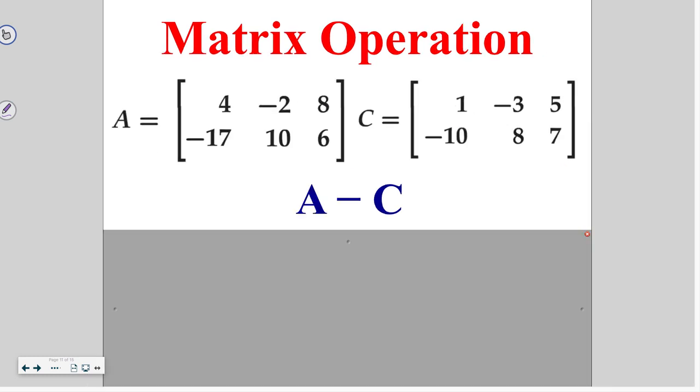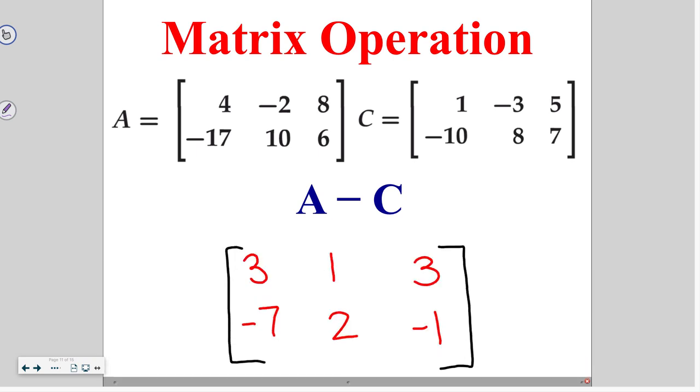Go ahead and try this one on your own, subtracting matrix A from matrix C. We get 3, 1, 3, -7, 2, -1. If you have questions about that, please let me know when you get to class.